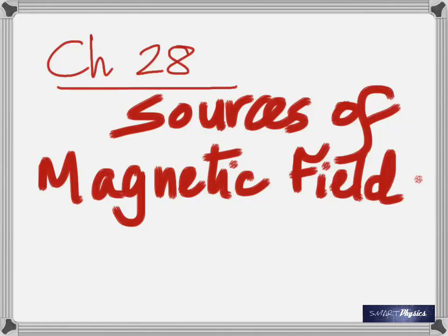Sources of magnetic field — that means how magnetic fields can be produced. Wherever there's an electric current, there is a magnetic field. That's a simple trick: if you have an electric current flowing, you're going to have a magnetic field.